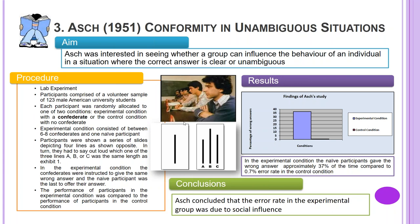The experimental condition consisted of between six to eight confederates and one naive participant. Participants were shown a series of slides depicting four lines. In turn, they had to say out loud which one of the three lines — A, B, or C — was the same length as Exhibit 1. In the experimental condition, the confederates were instructed to give the same wrong answer, and the naive participant was the last to offer their answer.